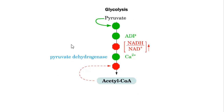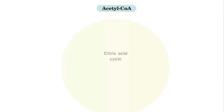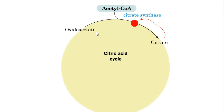The conversion of pyruvate into acetyl-CoA by the pyruvate dehydrogenase complex is a prime point of regulation because it determines the fate of pyruvate — whether it goes through aerobic respiration or anaerobic fermentation. This reaction is activated by pyruvate, ADP, and calcium ions, and inhibited by an increased NADH/NAD+ ratio and by the product acetyl-CoA.